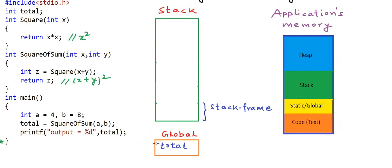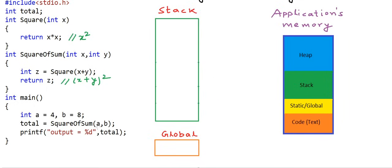When main finishes, the program will also finish, and in the end our global variables will also get cleared. There was no need in this program to keep the variable total as global. We should assign a variable as global only if it is needed at multiple places in multiple functions and is needed for the whole lifetime of the program. Otherwise it's a waste of memory to keep a variable for the whole lifetime of program execution.